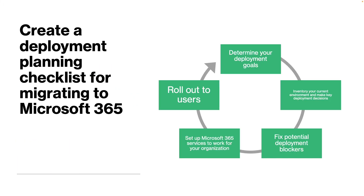The first step for you is to create a deployment planning checklist for migrating to Microsoft 365. When an organization moves to Microsoft 365, it's essential to plan every step down to the finest detail. This effort should include identifying each goal, who will be responsible for each goal, and the due date that each goal must be completed by. Microsoft supports this effort by providing the deployment planning checklist for Microsoft 365.